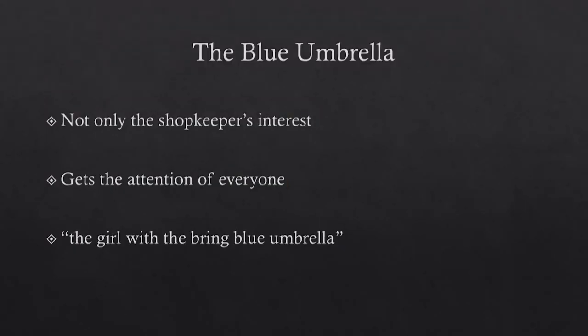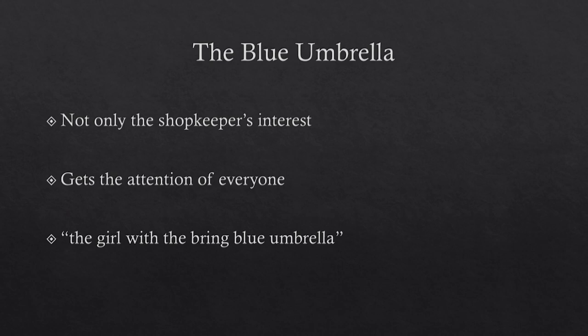The narrator notes they do have an umbrella at home, but it is black, old, and no longer in use. This beautiful thing is different — not part of the village, not functional, from the city, very modern and beautiful. The blue umbrella catches the attention of everyone, and once Binya walks with it everywhere, she becomes known as the girl with the blue umbrella. She gets noticed, and perhaps that added identity of owning this object from the town is also very important to her.